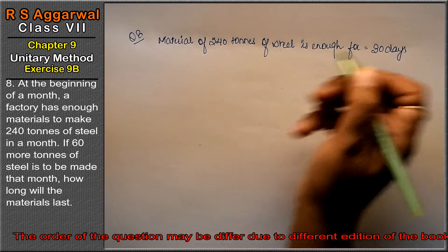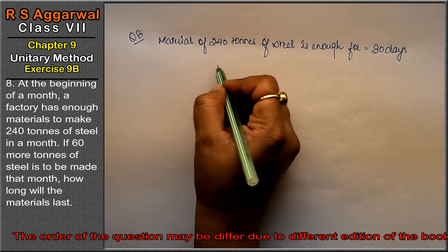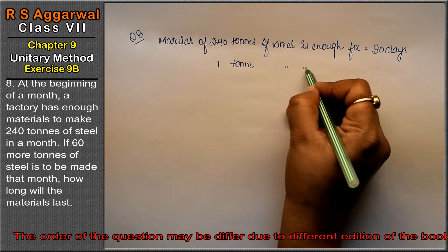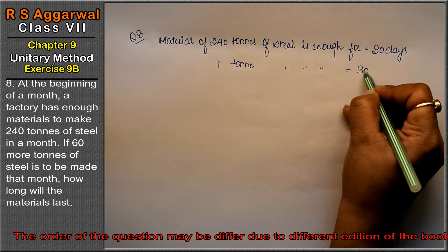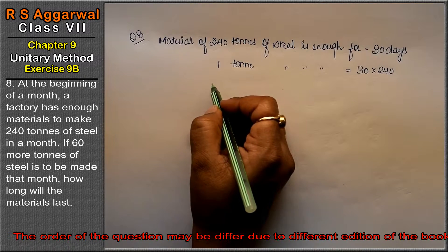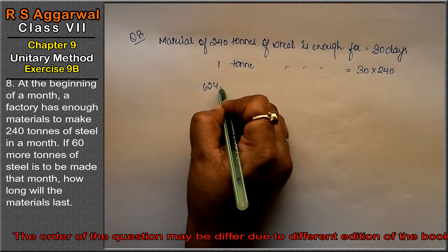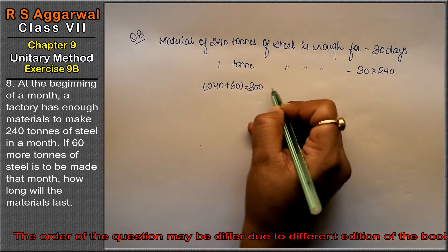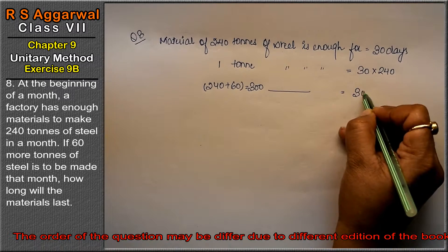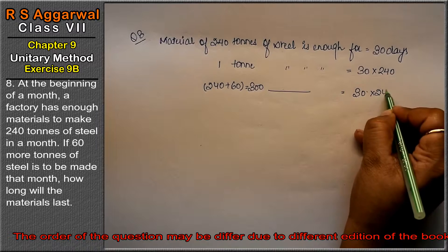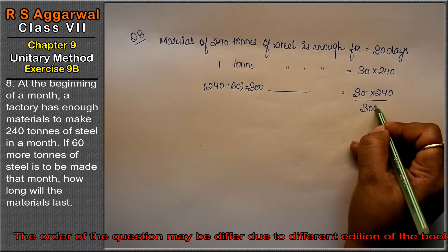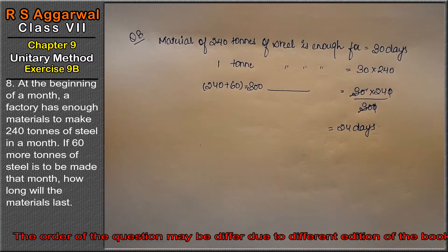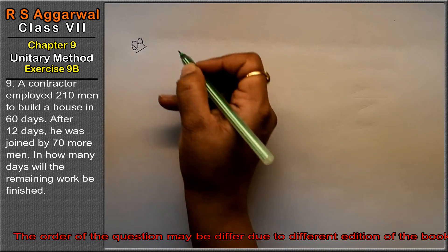If 60 more tons of steel is to be made, then one ton of material is enough for 30 into 240 days. That means 240 plus 60 turns of steel, that means 300 tons. So the material lasts for 30 into 240 divided by 300 — cancel 30 — that means 24 days is the answer.